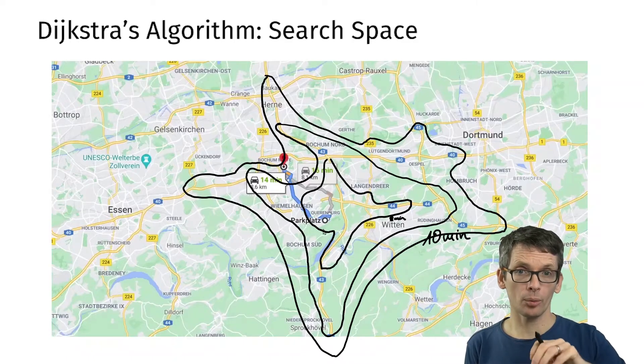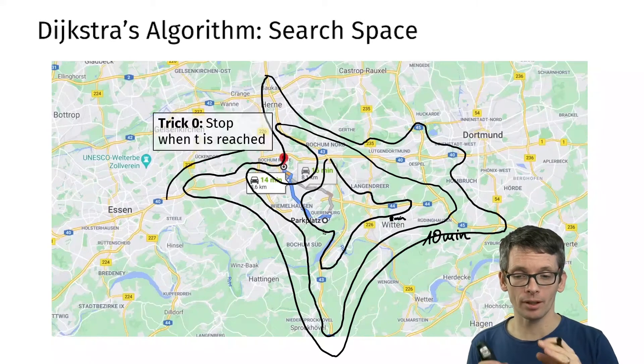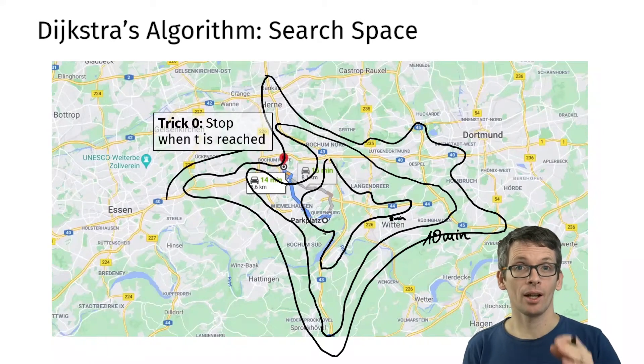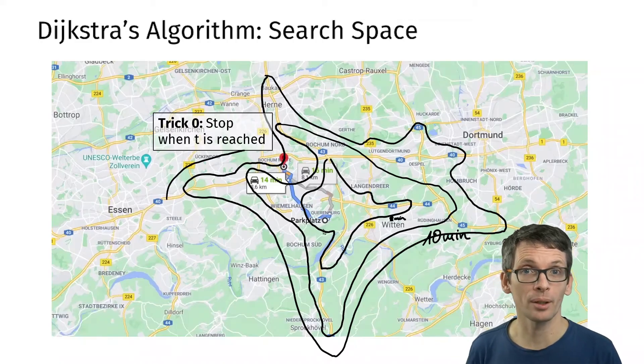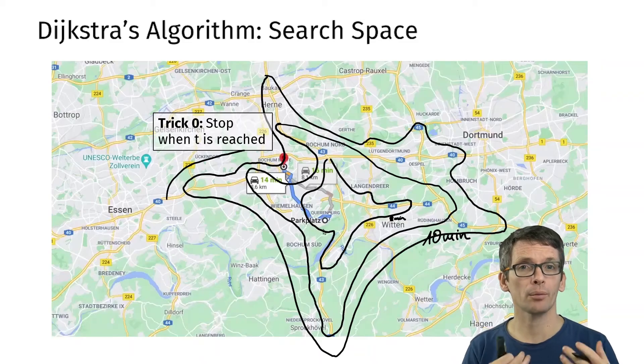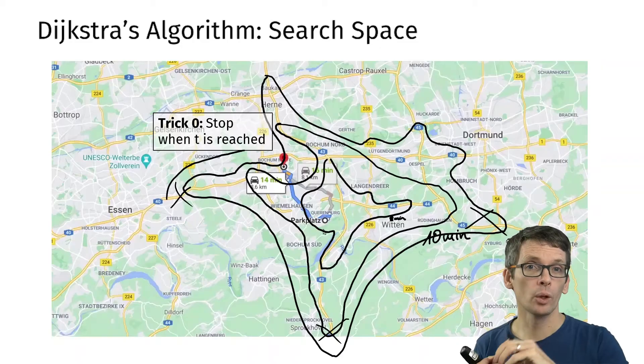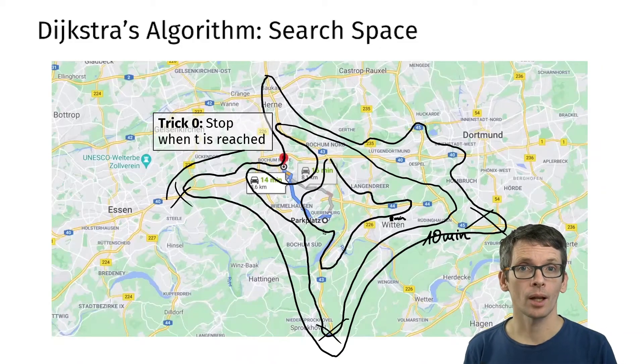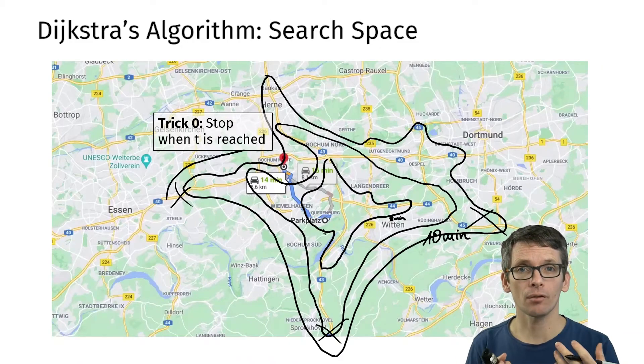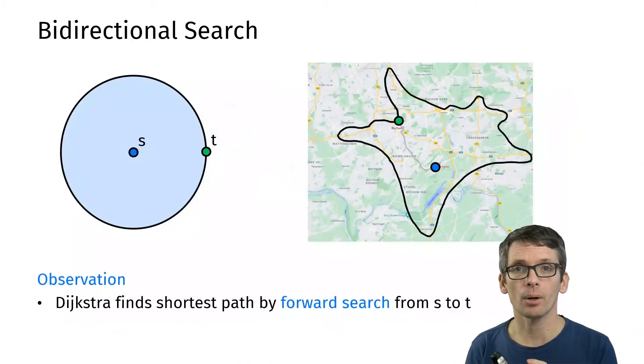Now of course Dijkstra's algorithm computes the shortest distance from s to all other nodes, so in principle it would continue here, but that's our first time saver: let's stop as soon as we've found what we have been looking for. But even if we stop Dijkstra's algorithm at this point, we've definitely explored nodes which aren't on the way to the mining museum. We have nodes in Dortmund or down here or halfway to Essen, which definitely would not be on our way to the mining museum.